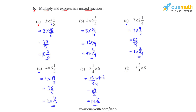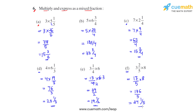The last part is part f, where we have 3 and 2 fifths. Converting to an improper fraction gives us 17 over 5, times 8. The product comes out to be 136 over 5. Dividing 136 by 5 gives a quotient of 27 and a remainder of 1, so the mixed fraction is 27 and 1 fifths. And this is how we solve this problem.